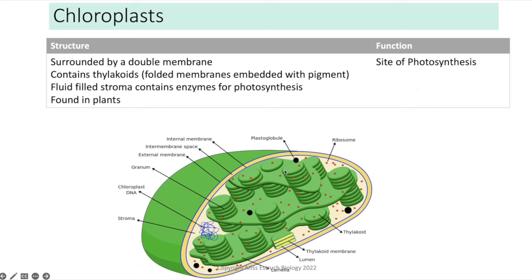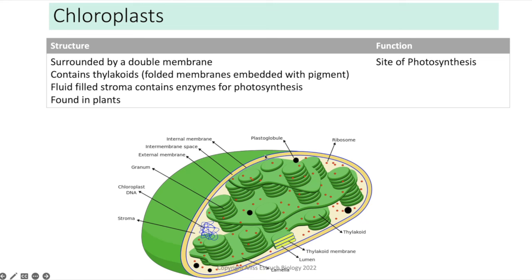Chloroplasts are double membrane-bound organelles found only in plants. Inside, the thylakoid membrane is highly folded into stacks called grana, which are embedded with pigments and proteins needed for the light-dependent reactions of photosynthesis. The fluid centre is called the stroma, which contains enzymes needed for the light-independent reactions. Overall, the chloroplast is the site of photosynthesis.